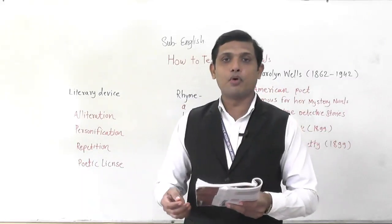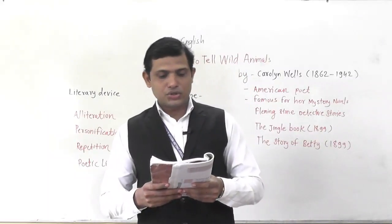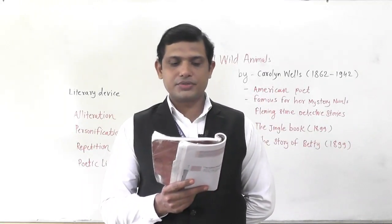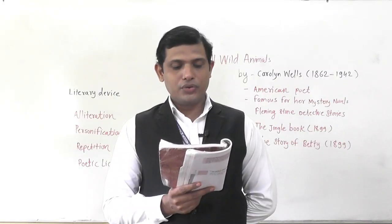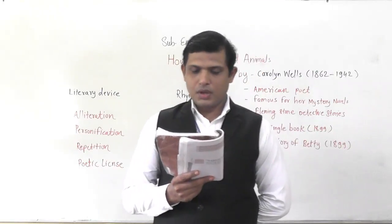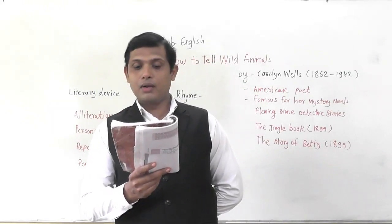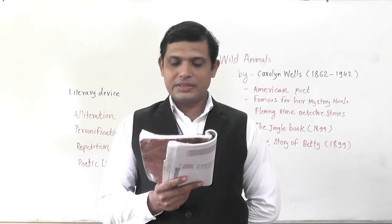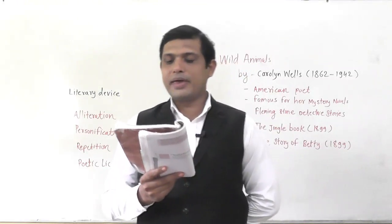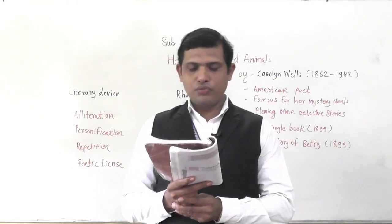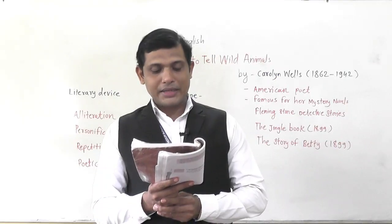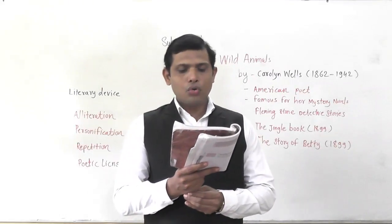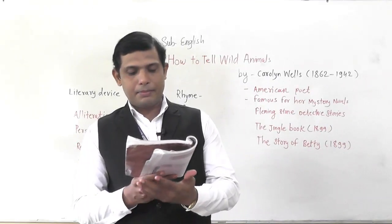First, let me read the poem. 'If ever you should go by chance to jungle in the east, and if there should to you advance a large and tawny beast; if he roars at you as you're dying, you'll know it is the Asian lion. Or if sometimes when roaming round, a noble wild beast greets you with black stripes on yellow ground — just notice if he eats you; this simple rule may help you learn the Bengal tiger. If strolling forth a beast you view whose hide with spots is peppered, as soon as he has leapt on you, you'll know it is the leopard. It will do no good to roar with pain — he will only leap and leap again.'